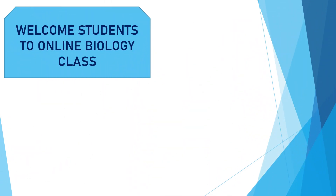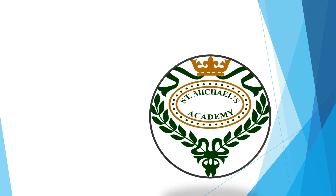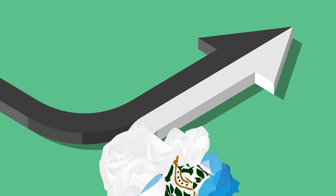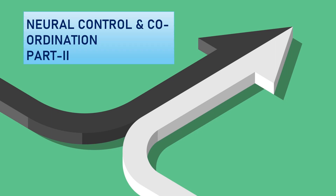Good morning students. Hope you have enjoyed the last class. Welcome to another Digital Biology Classroom of St. Michael's Academy. Today I am going to continue that particular chapter only, Neural Control and Coordination, which includes Synapse, Receptor, Neurotransmitter and Central Nervous System or CNS.